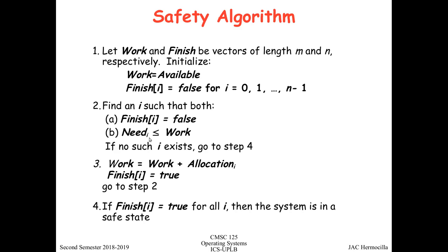The less-than-or-equal notation means all elements of need[i] must be less than or equal to the corresponding elements of Work per index. If no such i exists, go to step 4. If everything in the Finish vector is true, then the system is in a safe state.